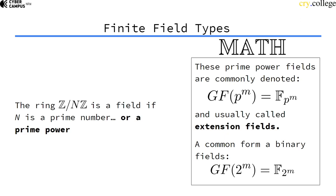As it turns out, not only prime numbers give us a field, but also powers of prime numbers. These fields are usually called extension fields. A common form of this are binary fields, GF(2^m), with the prime number two to the power of something. The arithmetic in binary fields can be implemented quite efficiently on modern computers.